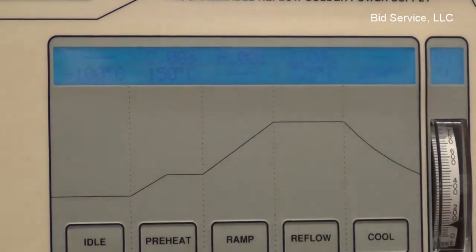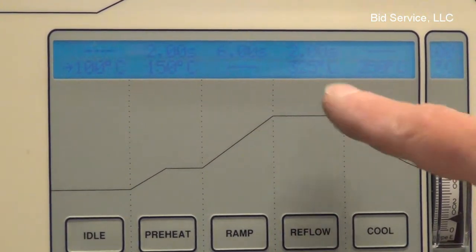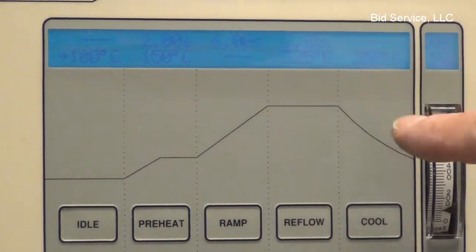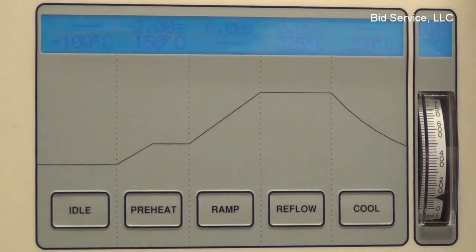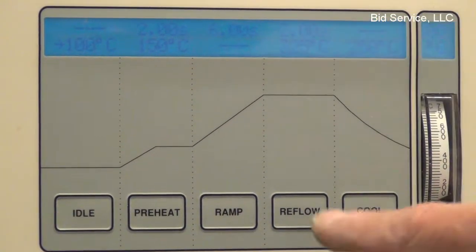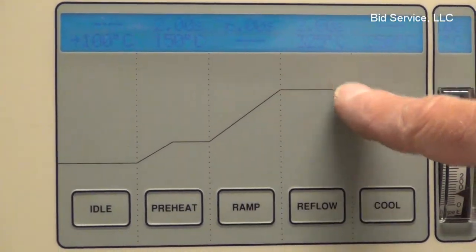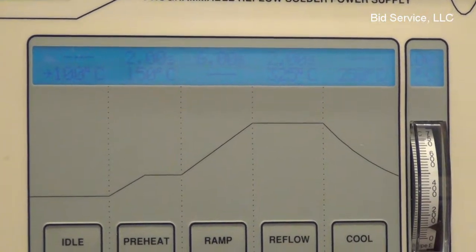We've got a preheat of 150 for 2 seconds. We're going to ramp for 6 seconds up to 325. Maintain that temperature for 2 seconds. And then here I changed the cool temperature. Brought it up a little bit so we don't have to wait as long for it to hit the cool temp. You see it ramping down here to your cool temperature.